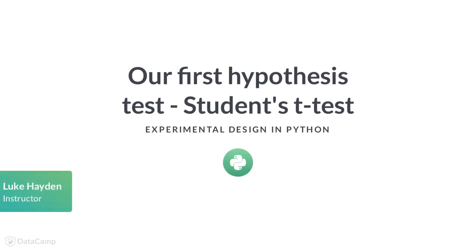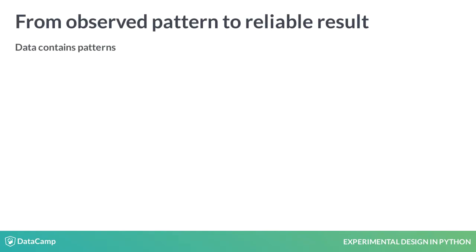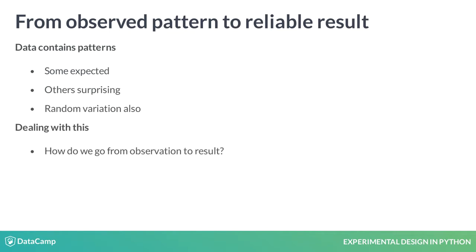It is possible to find all kinds of patterns in data. Some are expected, while others are more surprising. However, most data sets also include random variation. Knowing this, how can we go from a simple observation to a reliable result?